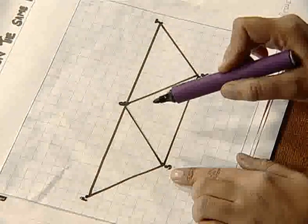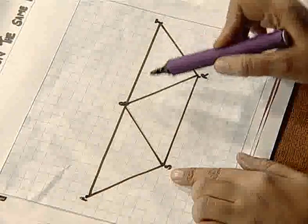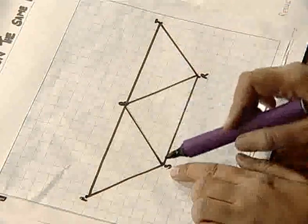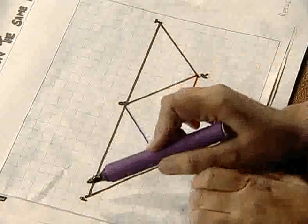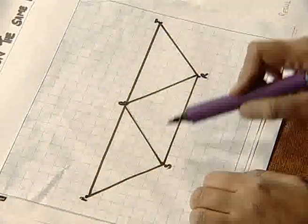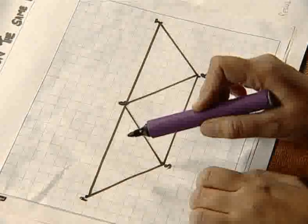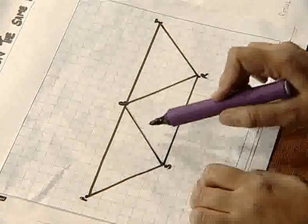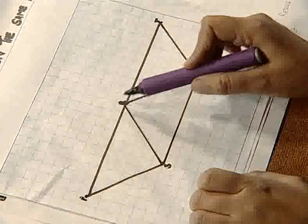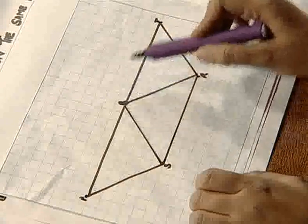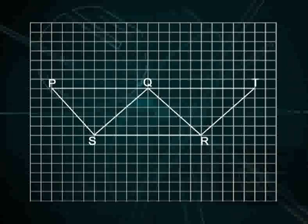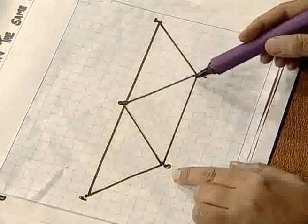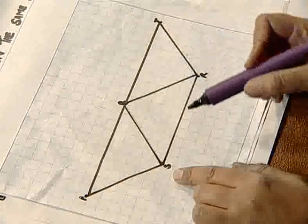So, to find the areas of these two parallelograms having the same base SR and between the same parallels PT and SR, we find the areas of the three triangles PQS, QRS, and QTR by counting complete squares, more than half squares, half squares, and less than half squares enclosed in each triangle. Let us start counting.